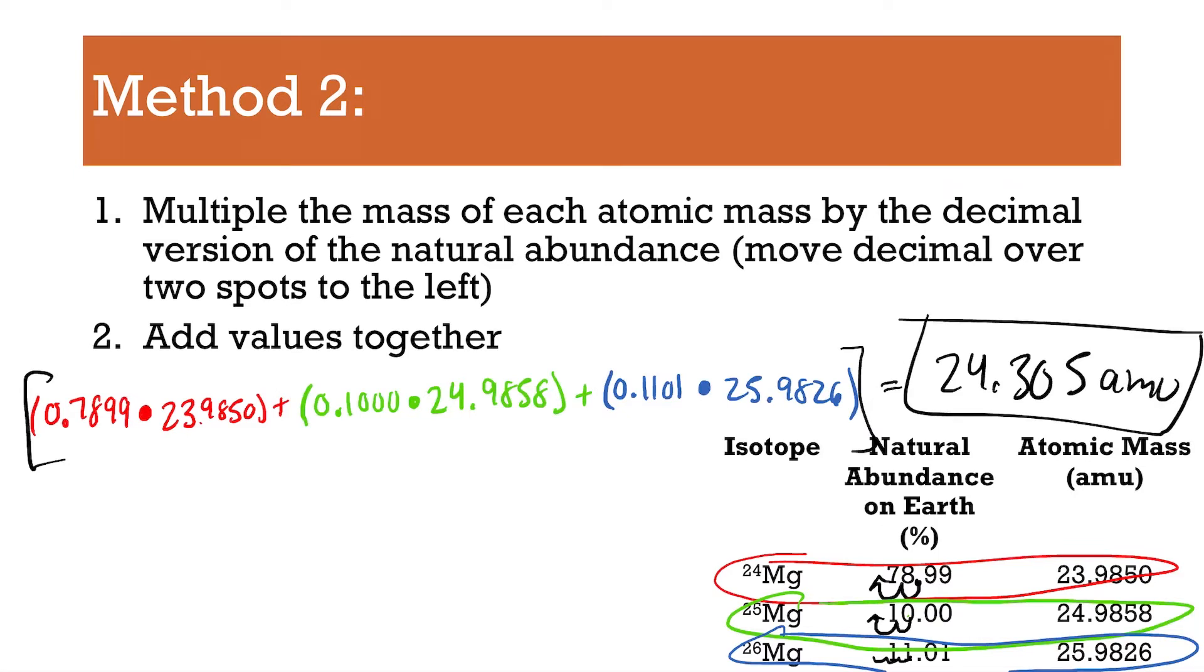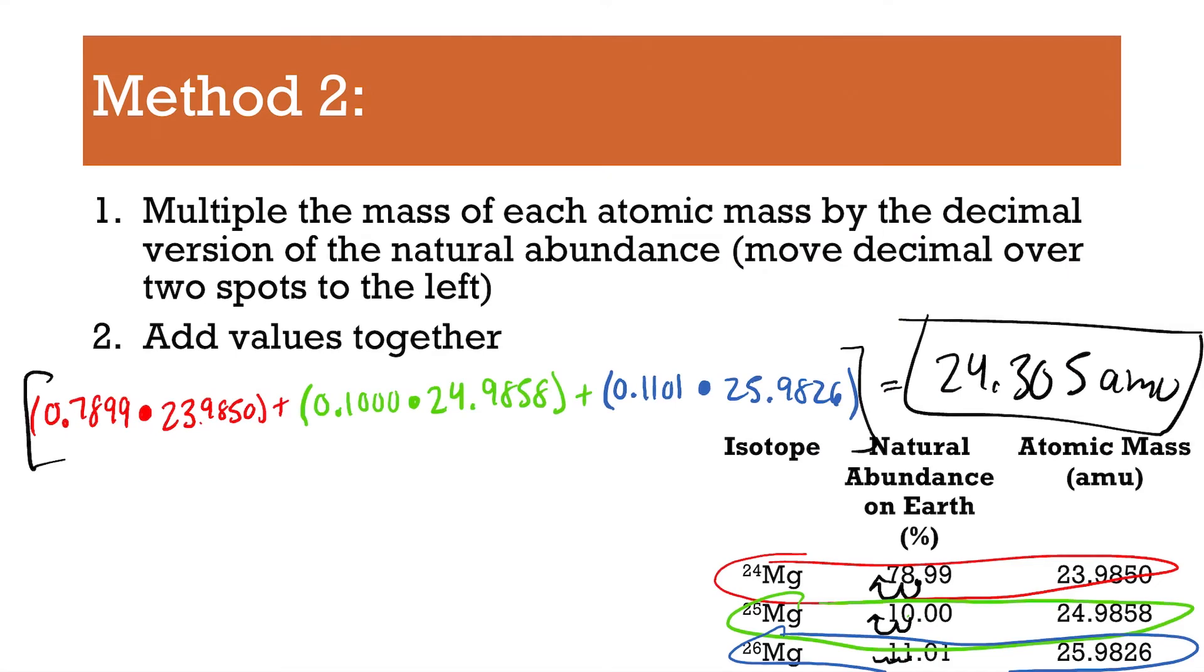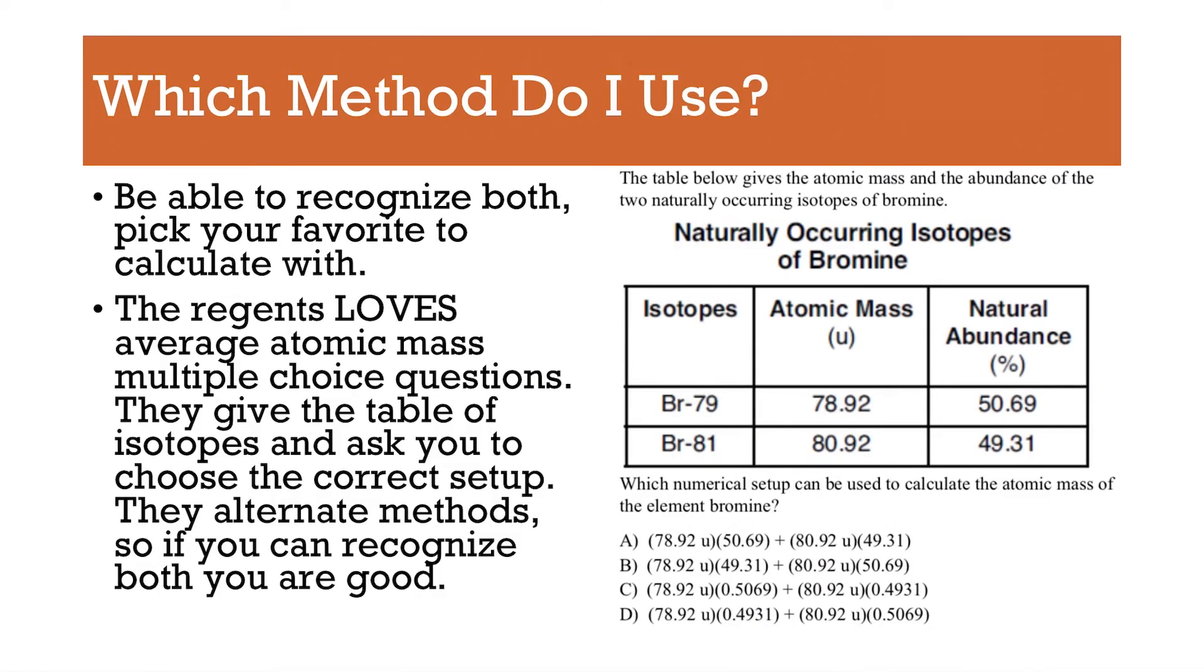Again, that is what the periodic table says. That's what you got. So, which method do I have to use? Honestly, it's up to you. The regents loves asking these types of questions. And generally, they like to ask it with the method two version. But as long as you can recognize both and you're comfortable doing one of them, that's all that matters. I personally like converting the percentages to decimals. That's just me.